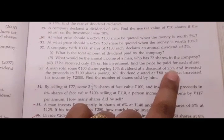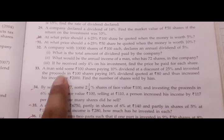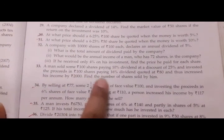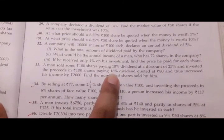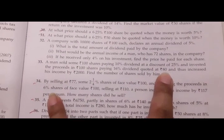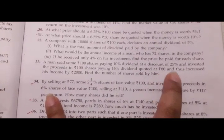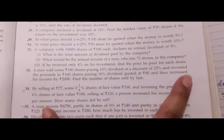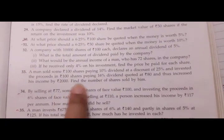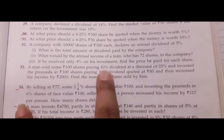He sold all his shares and invested the proceeds in new shares. The face value of the new shares was rupees 100, dividend percent was 16%, and they were quoted at rupees 80 — meaning the market value was rupees 80. By doing this he increased his income by rupees 2000. We need to find the number of shares he originally sold.